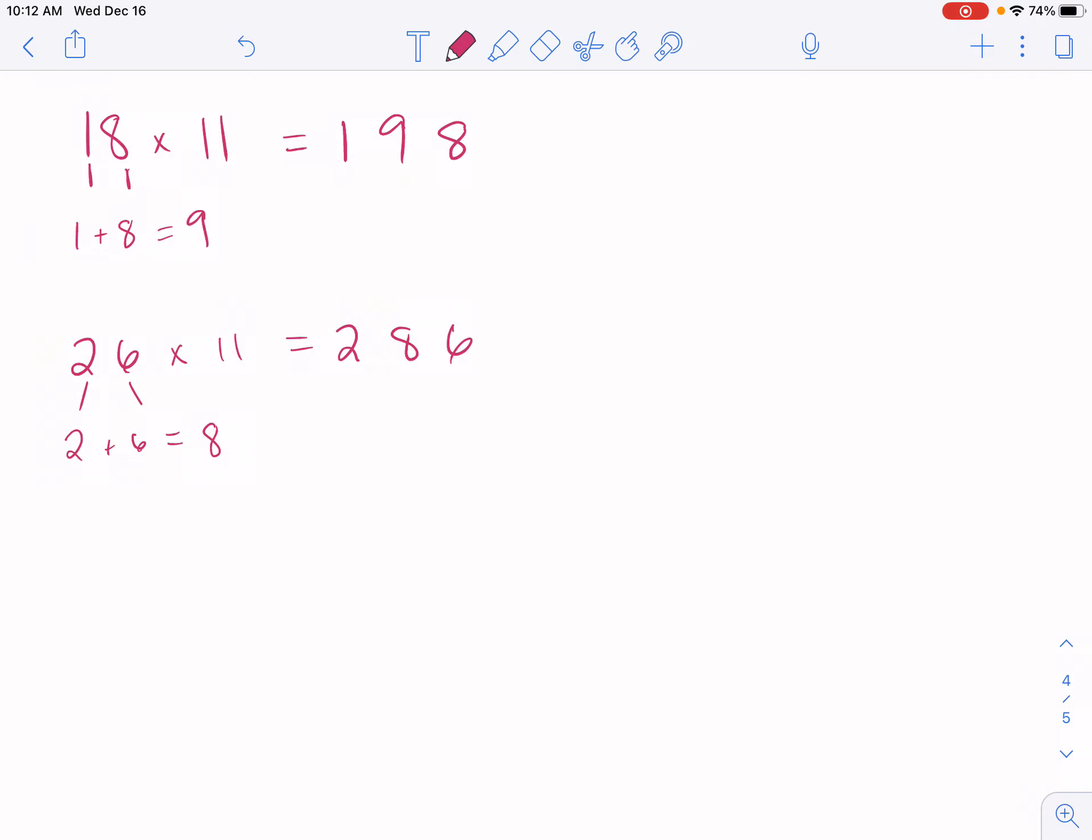But sometimes we have a number like 95 times 11, where I don't just get one nice clean number to put in the middle. I'm still going to break it up. I'm going to do 9 and 5, and then I'm going to add these two together. But this time it's 14.